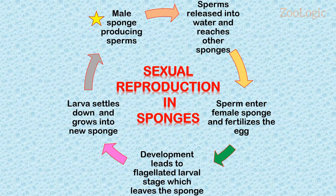Fertilization leads to the formation of a zygote. Development then leads to a flagellated larval stage, which leaves the sponge. This development takes place within the maternal sponge, leading to the formation of larval stages. The larvae bear flagella which help them escape from the maternal sponge body. The larva escapes from the parental body and swims for a few hours to many days. Finally it settles down, attaches to a suitable substrate, and metamorphoses to grow into a new sponge. And again this cycle continues.